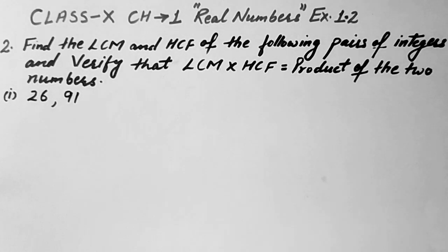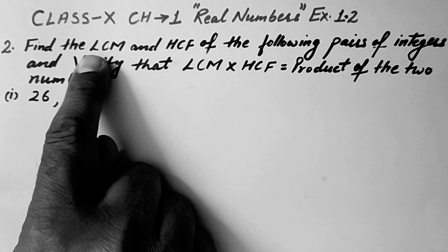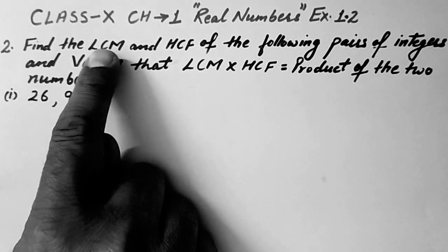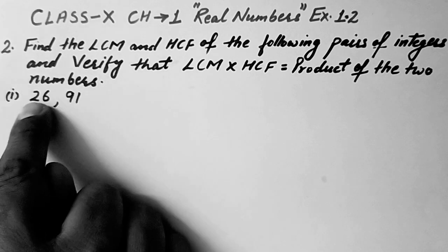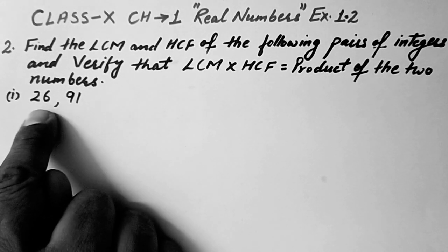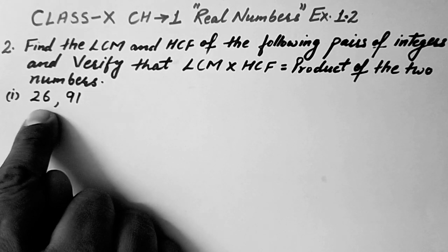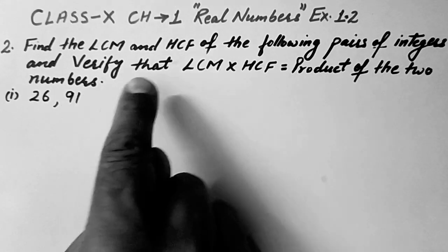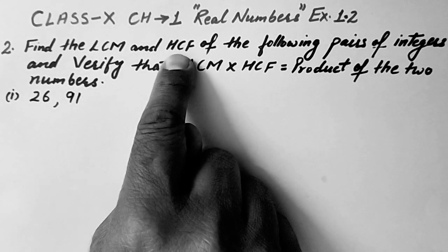So in this question what we do. First of all I want to tell you what is LCM. LCM is the least common multiple. If these two numbers are there we will see what is the least common multiple of these two.